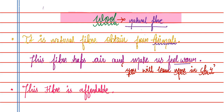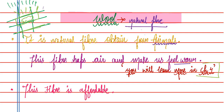Let me explain with different colors: this is your fiber with blocks — air enters from outside and gets trapped inside the fiber, so the cold does not reach your body and you feel warm. You will also study more about this in chapter 4 on heat. This fiber is also affordable.